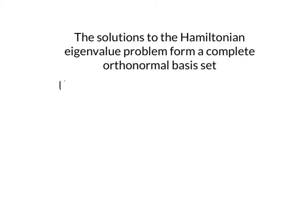In general, when we solve the Hamiltonian, h-hat psi equals E psi, we end up with a set of eigenfunctions — a set of wave functions — that solve this Hamiltonian. Each eigenfunction in that set has a specified energy. So in general, we don't just get one solution, we get a set of solutions. And this set of solutions forms what we call a complete orthonormal basis set. So we need to talk about what we mean by each of these things.